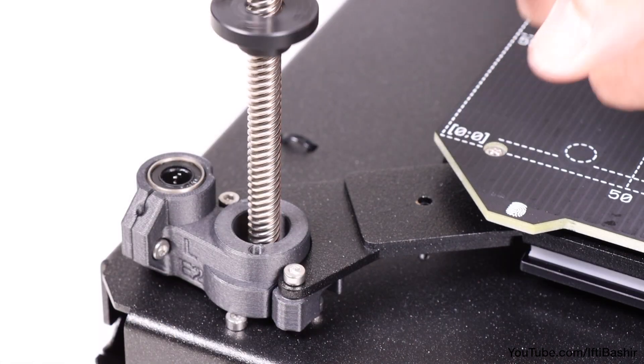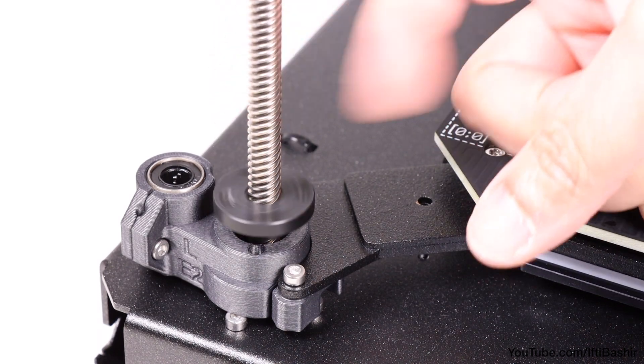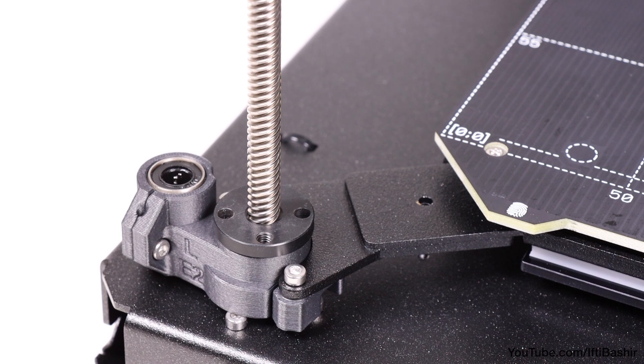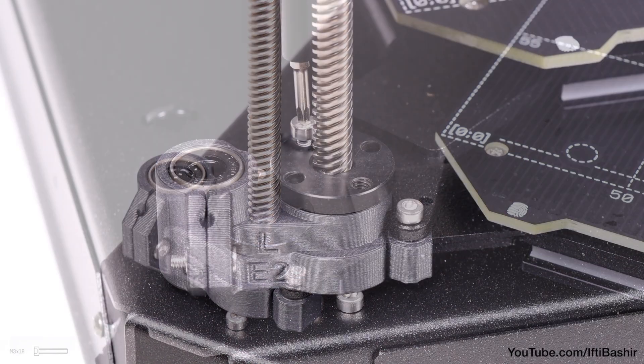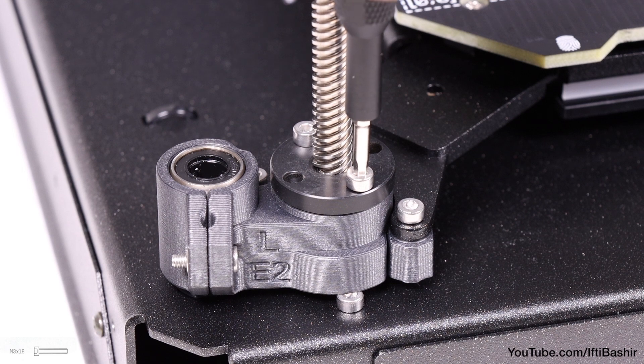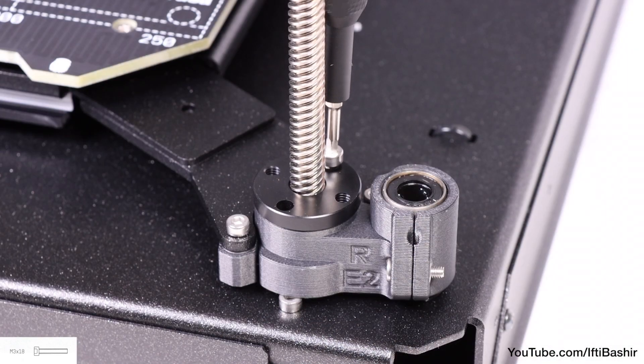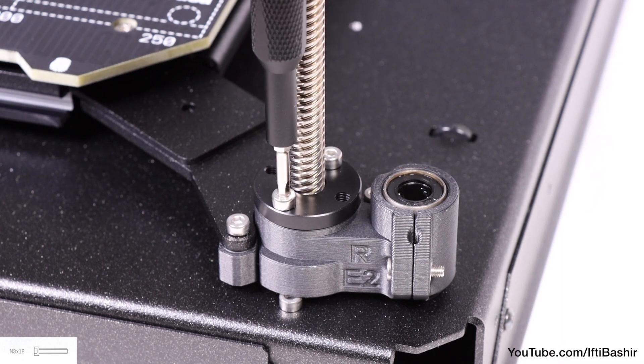It's a similar process up front. Feed a nut down the left threaded rod, with the hat facing upwards, until it lines up with the holes in the corner mount, and secure with two M3 by 18 screws. Finally, repeat the same process on the front right threaded rod too.